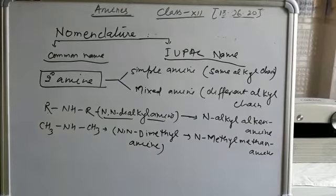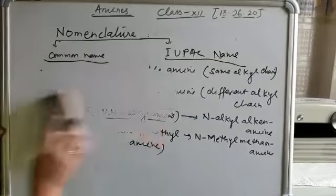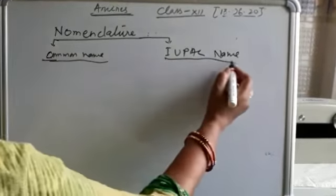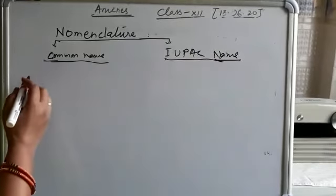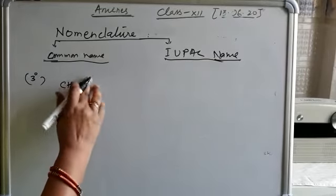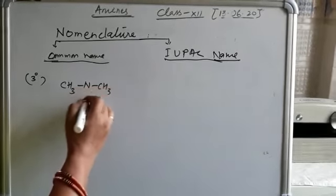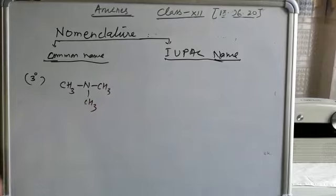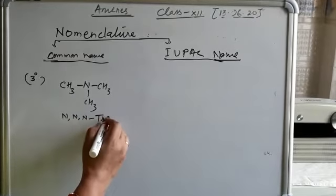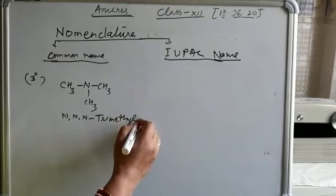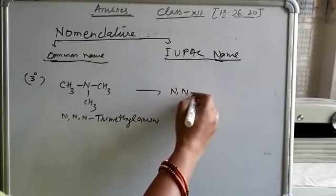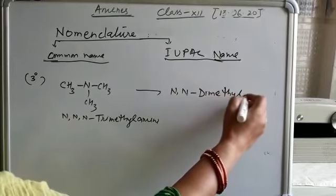Let's talk about a third-degree amine example. For a compound where all three hydrogens of ammonia are replaced by three alkyl groups, what will be the common name? The common name is N,N,N-trimethyl amine, and the IUPAC name is N,N-dimethylmethanamine.